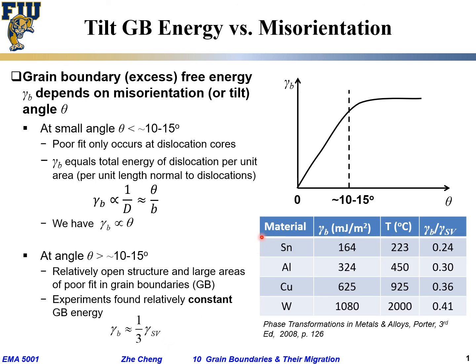This table lists examples of grain boundary energy for different metals at different temperatures. The grain boundary energy versus surface energy ratio ranges from about 0.25 to 0.4, which is roughly one third of the surface energy. This is the plateau value for all four different metals shown, measured at very different temperatures.